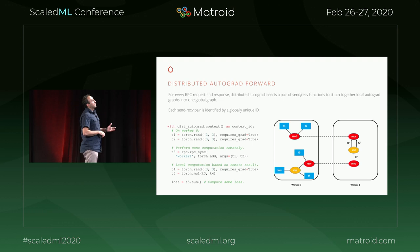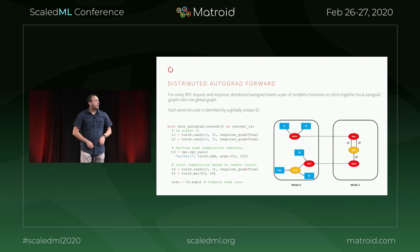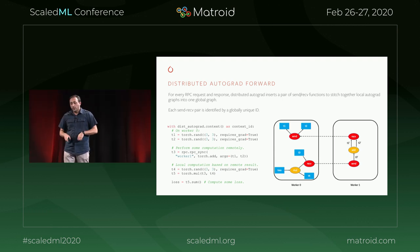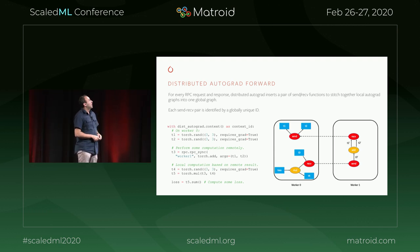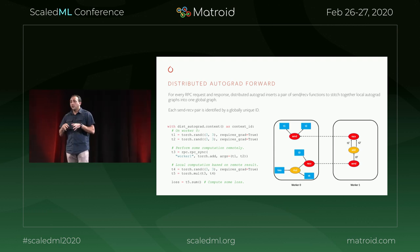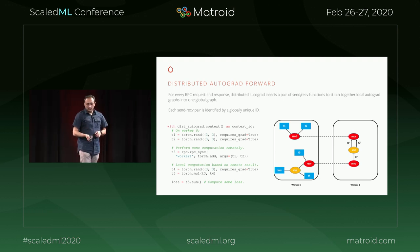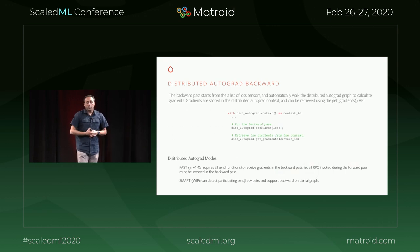What's happening behind the scenes? Take an example with two tensors T1 and T2. You want to add them together on a remote machine — this happens on worker number one. Then with two other tensors T4 and T5, you compute the loss. PyTorch distributed autograd inserts send and receive calls for you automatically and computes the gradients, knowing that this graph is partitioned across different nodes. All you need to do is use the distributed autograd context and everything else works. There are also optimizations possible — for example, if you're doing a backward pass on a loss function, you only need to update the relevant parameters corresponding to that loss function computation and nothing else. This is experimental and a work in progress.